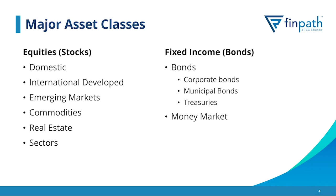On the fixed income side, we're looking at bonds, which are generally broken down into three different categories: corporate bonds — debt issued by a corporation; municipal bonds — debt issued by some kind of government agency; and treasuries, which come from the U.S. government. Probably one of the most conservative investments we can have is putting money into a money market, which carries the least risk but also the expectation of the lowest return, since we're taking very little risk.